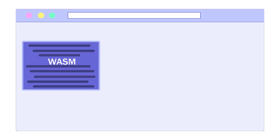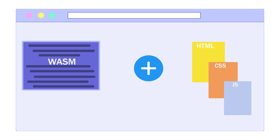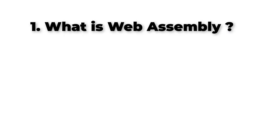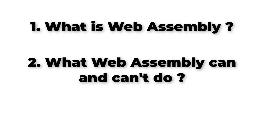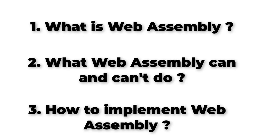On 5th December 2019, WebAssembly became the fourth language standard along with HTML, CSS and JavaScript to run natively in the browser. Ever since, there has been a lot of confusion around what is WebAssembly, what it can and can't do and how to implement it.